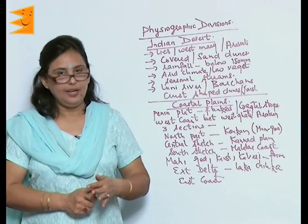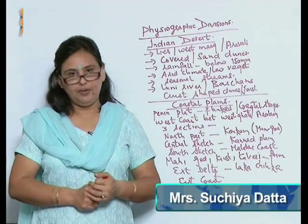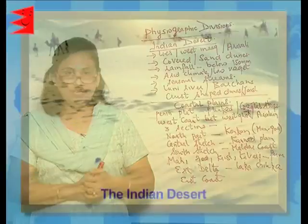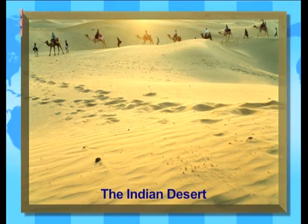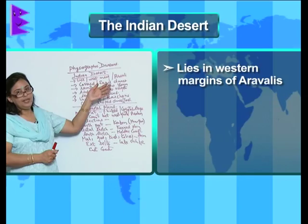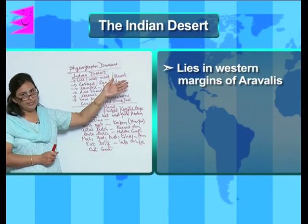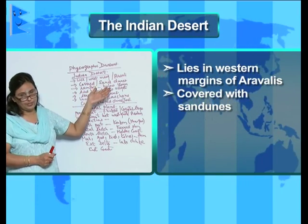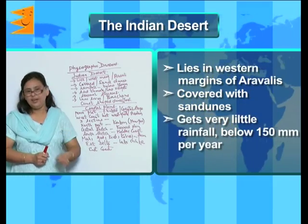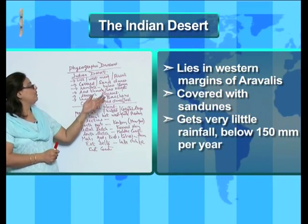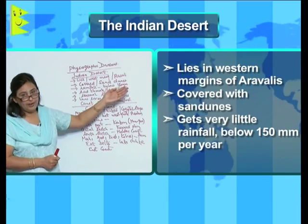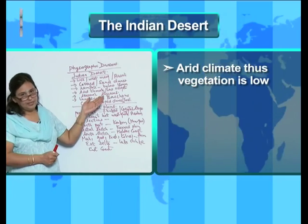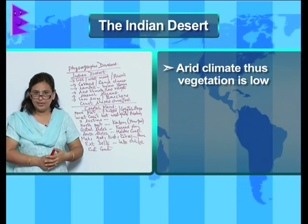We have already seen the three physiographic divisions of India. Let us talk about the fourth physiographic division, which is the Indian Desert. The Indian Desert lies in the western margins of the Aravallis and it is always covered with sand dunes. This area gets very little rainfall, almost as low as below 150 millimeters. It has an arid climate and therefore the vegetation is very low.